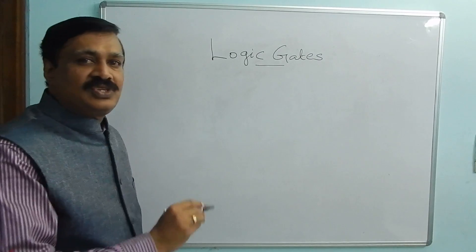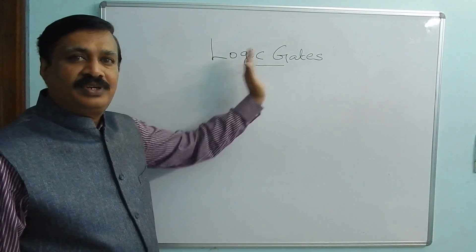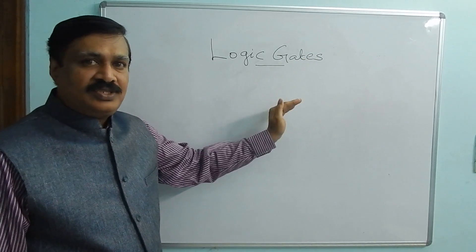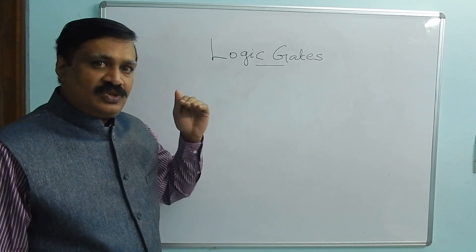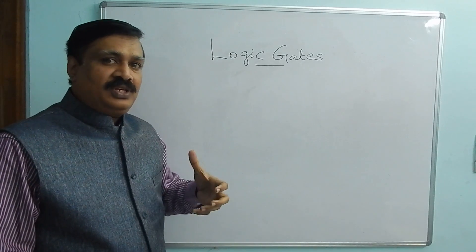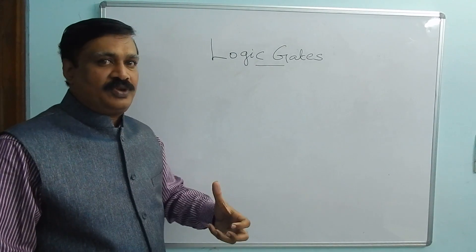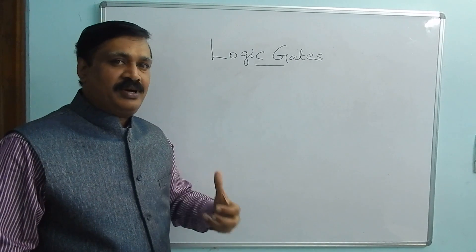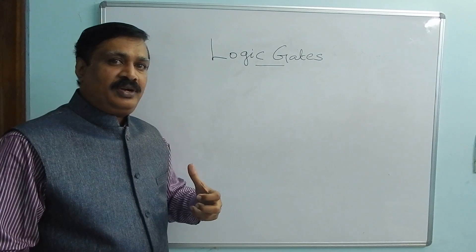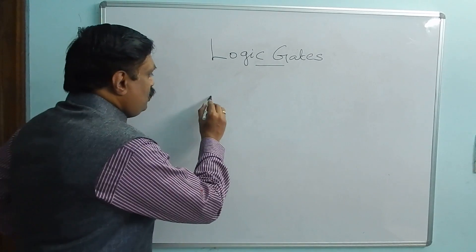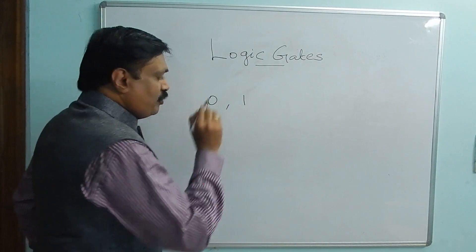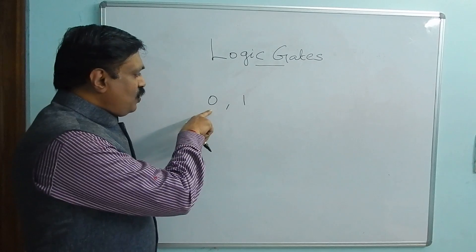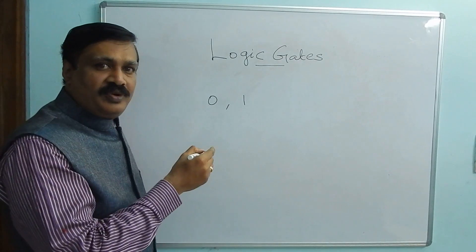Logic gates are the fundamentals of digital electronics. Before seeing logic gates, let us see how this computer accepts the inputs. As you know, a computer cannot accept decimal numbers. A computer accepts only 0 and 1 binary numbers.